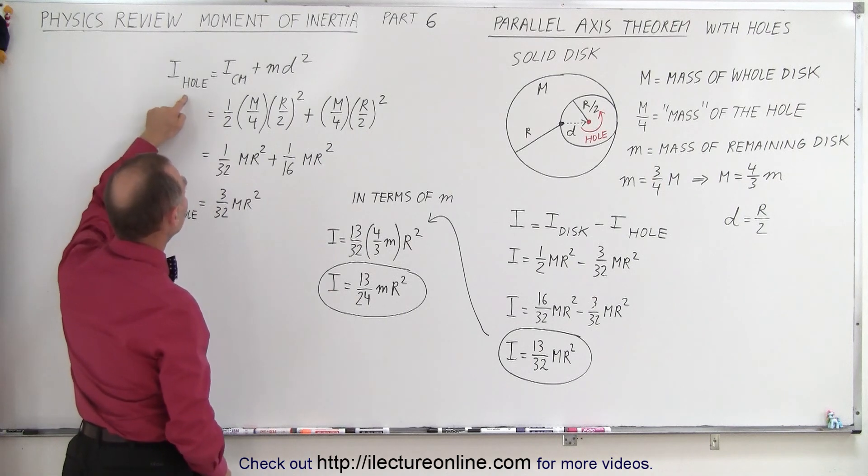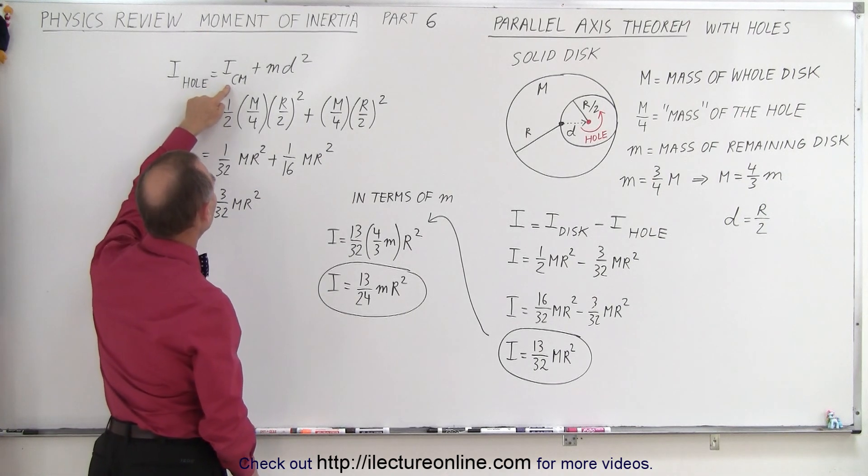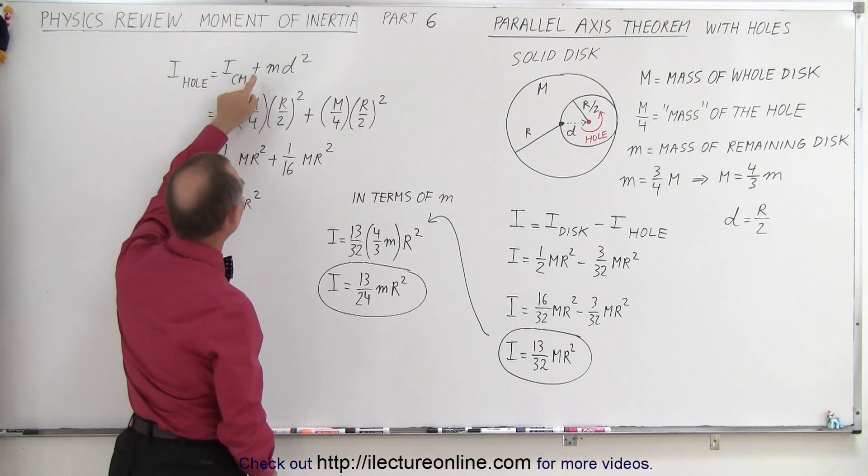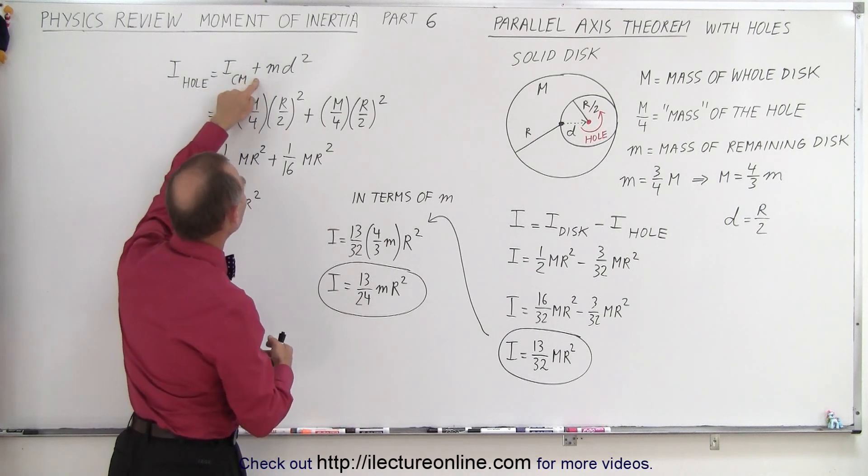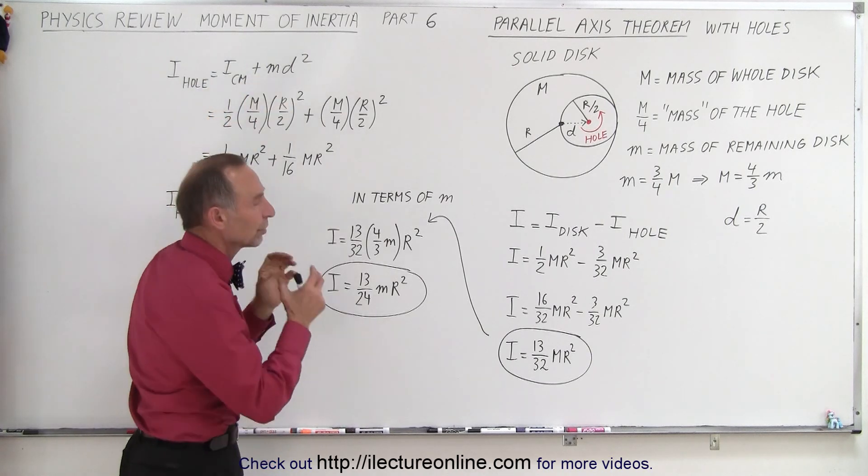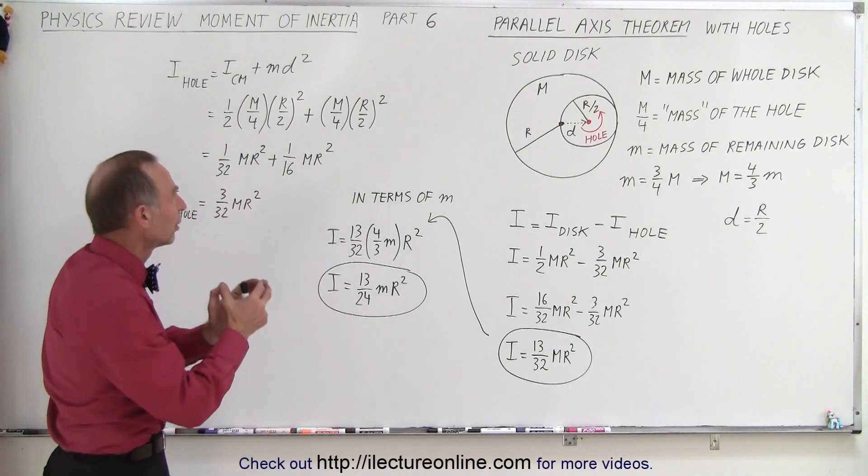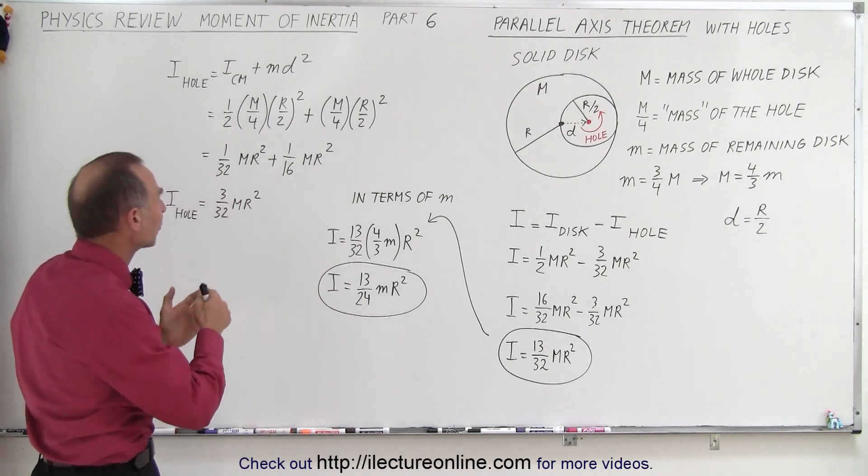The parallel axis theorem for the hole is that the moment of inertia at the center of mass must be added to md squared, the distance that you moved the hole squared times the mass of the hole.